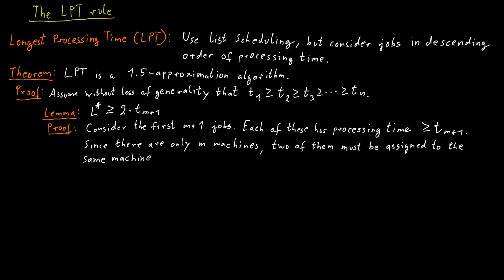And that machine gets two of those jobs, and therefore, the load of that machine will be at least two times the processing time of the m plus 1 job.